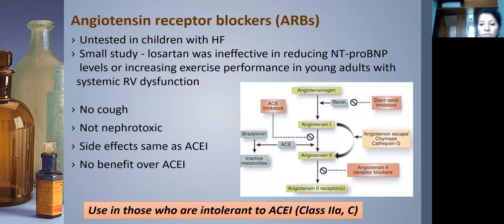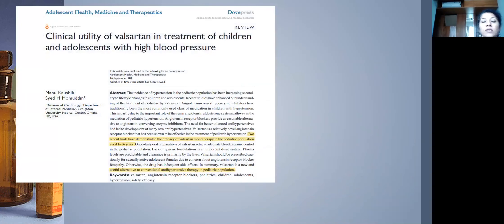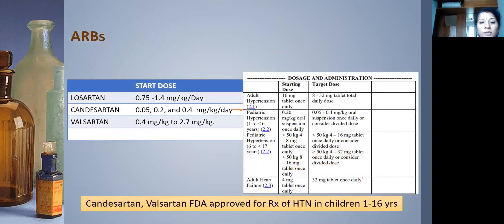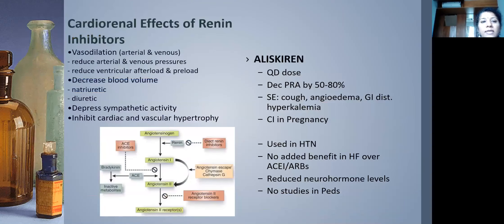Regarding pediatric ARB evidence: valsartan has shown utility in adolescents for hypertension, and candesartan was well tolerated in hypertensive children aged 6–17 years with a pharmacokinetic profile similar to adults. Both candesartan and valsartan are FDA-approved for hypertension treatment but not for heart failure. The data we have is from hypertensive, not heart failure, patients.